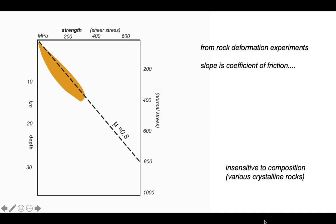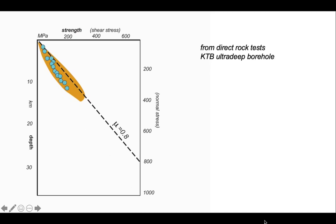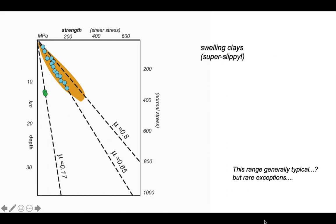These deformation experiments have been calibrated against direct observations from very deep boreholes — here's an example from the KTB ultra-deep borehole in Germany, with in-situ results picking out a linear trend on a slightly different gradient. The friction coefficient range of 0.65 to 0.8 is generally thought to be typical. There are outliers, such as swelling clays, which are super slippery with a friction coefficient of about 0.17 — important for some fault zones, but probably not appropriate at the lithosphere scale.